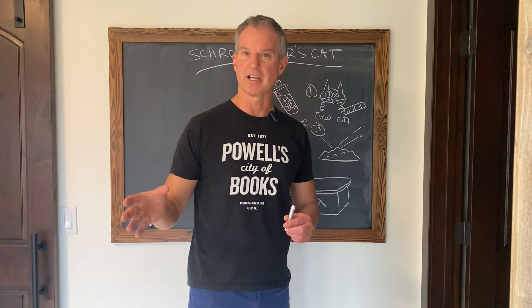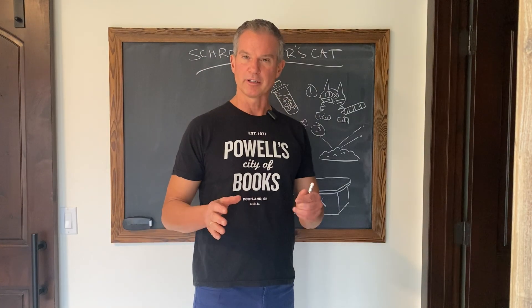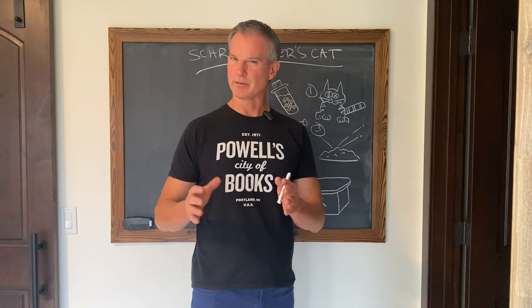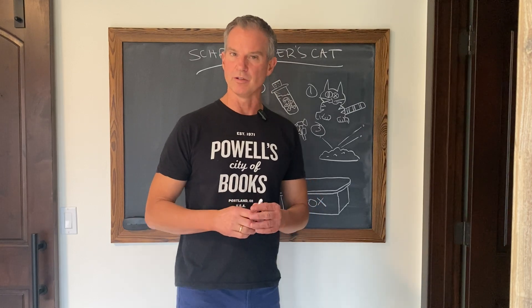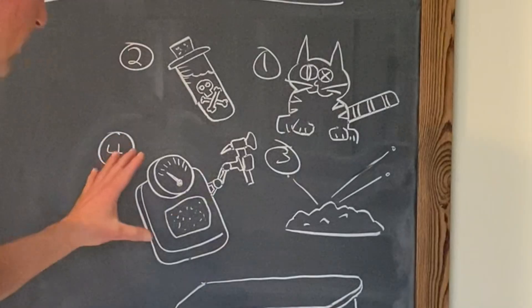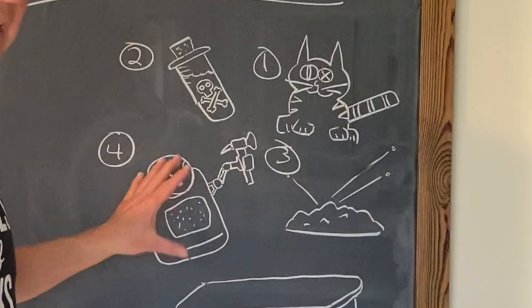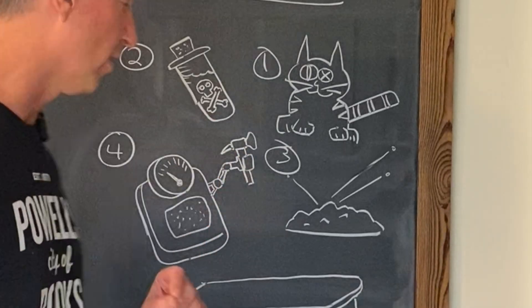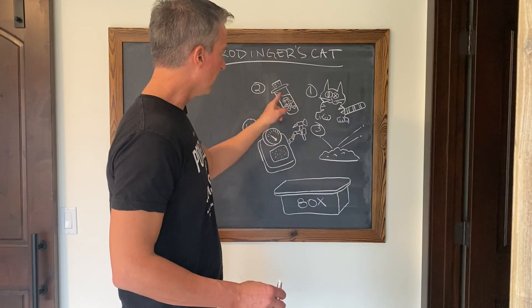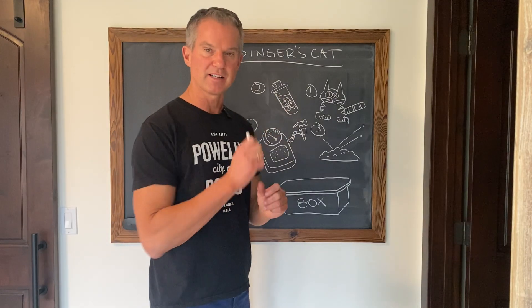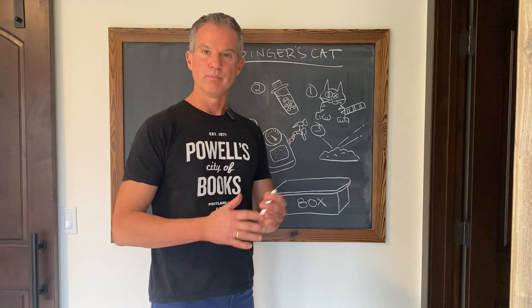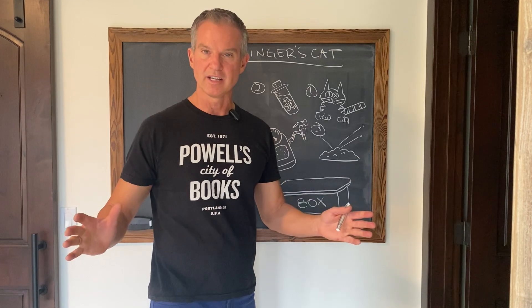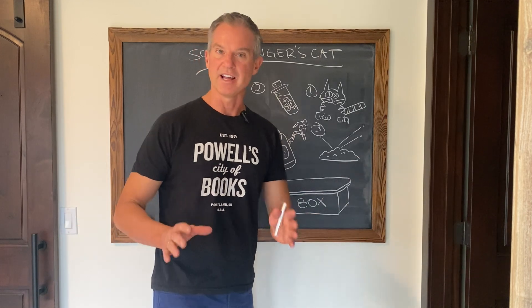A Geiger counter can detect radioactive particles. The Geiger killer would do the same thing — it can detect radioactive particles — but when it detects one, this little hammer smashes the vial, poison is released, and the cat dies.